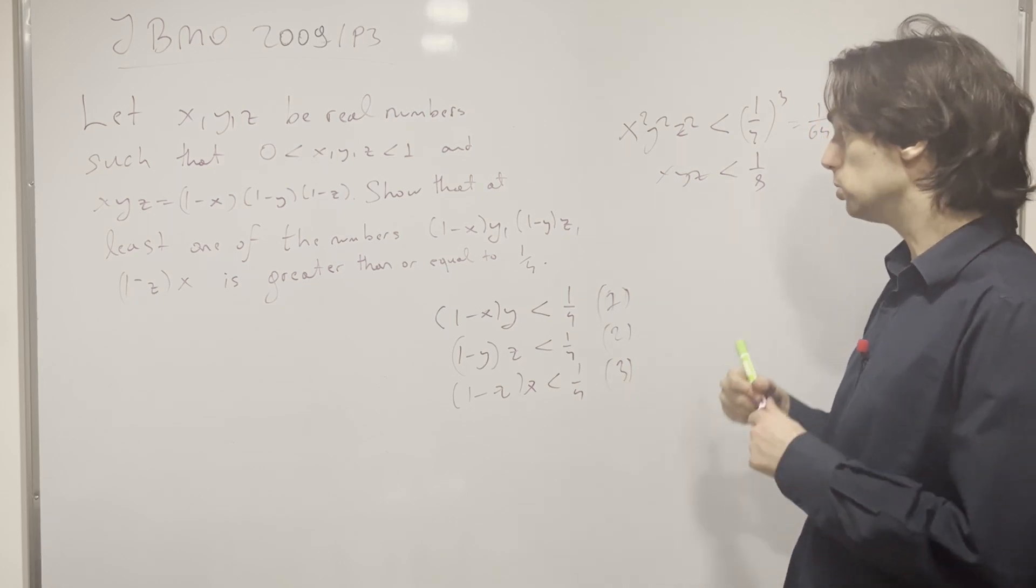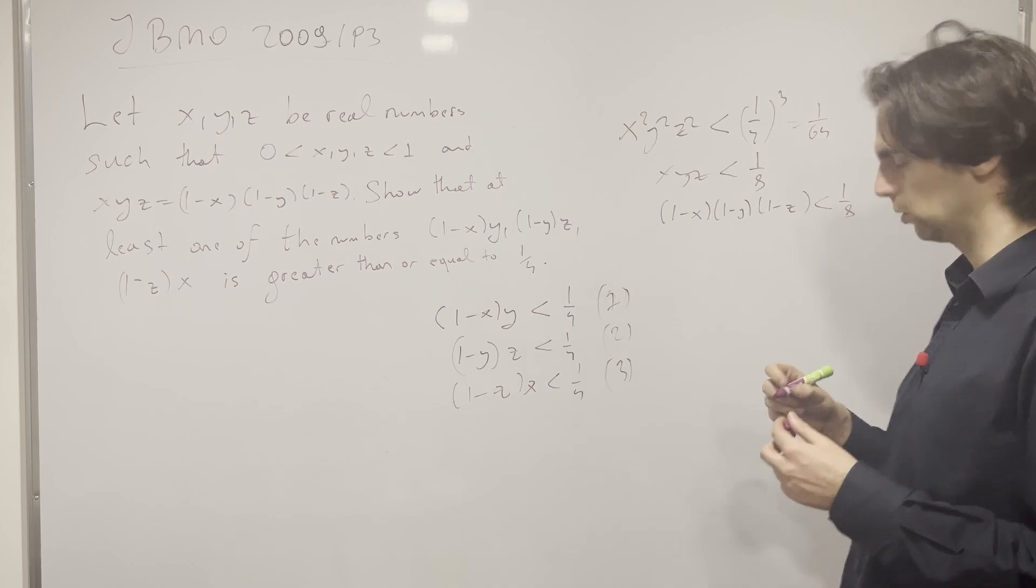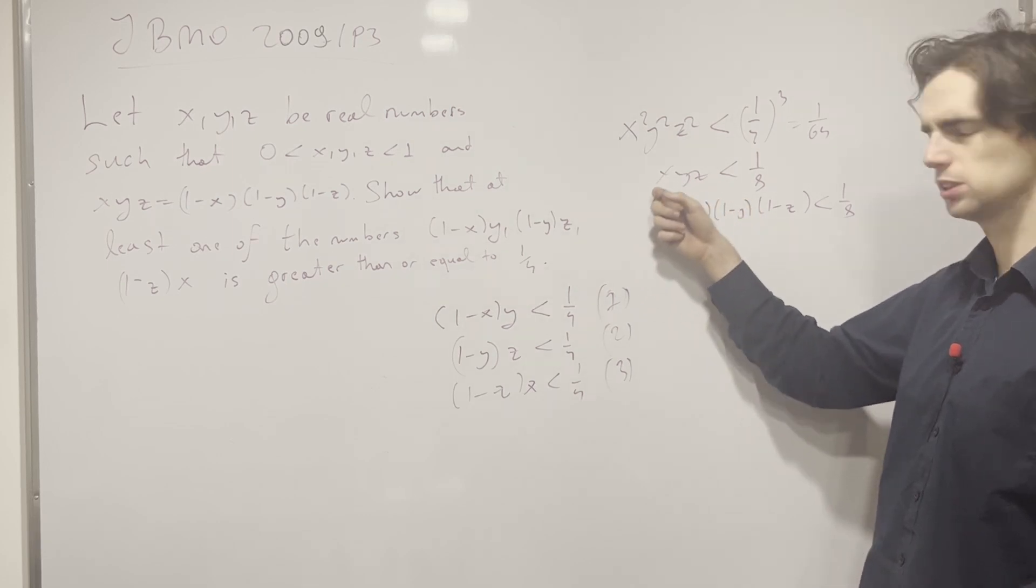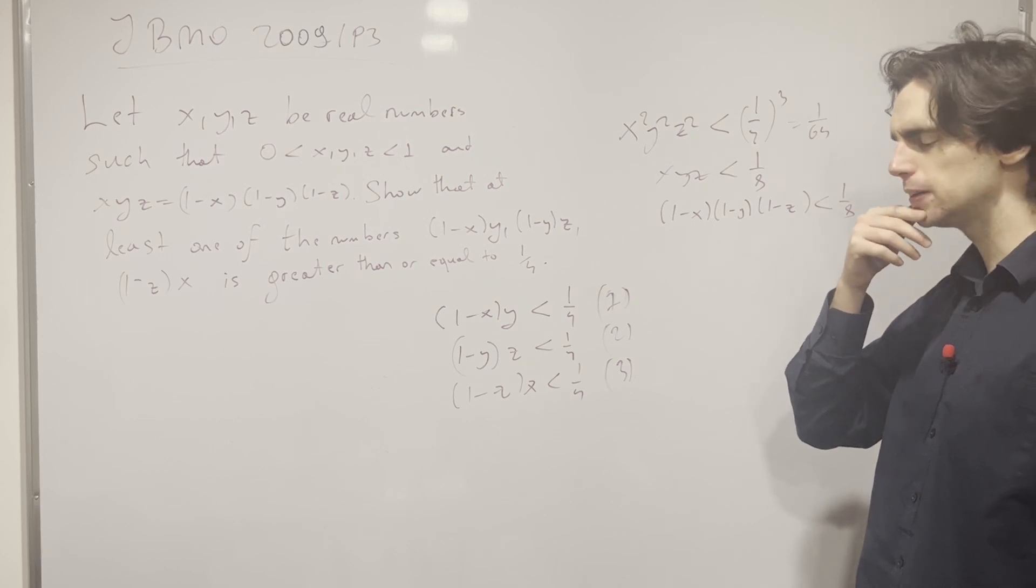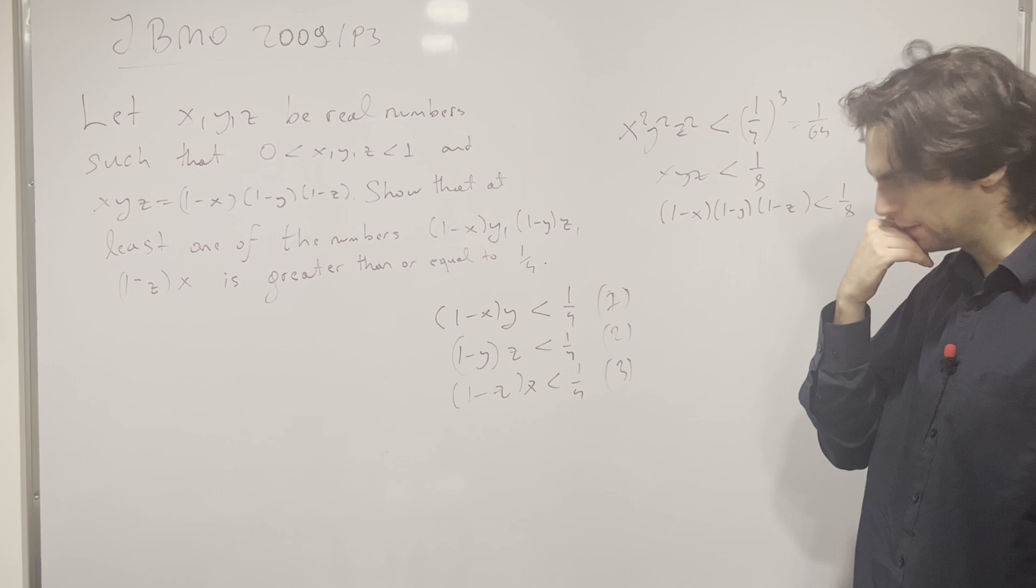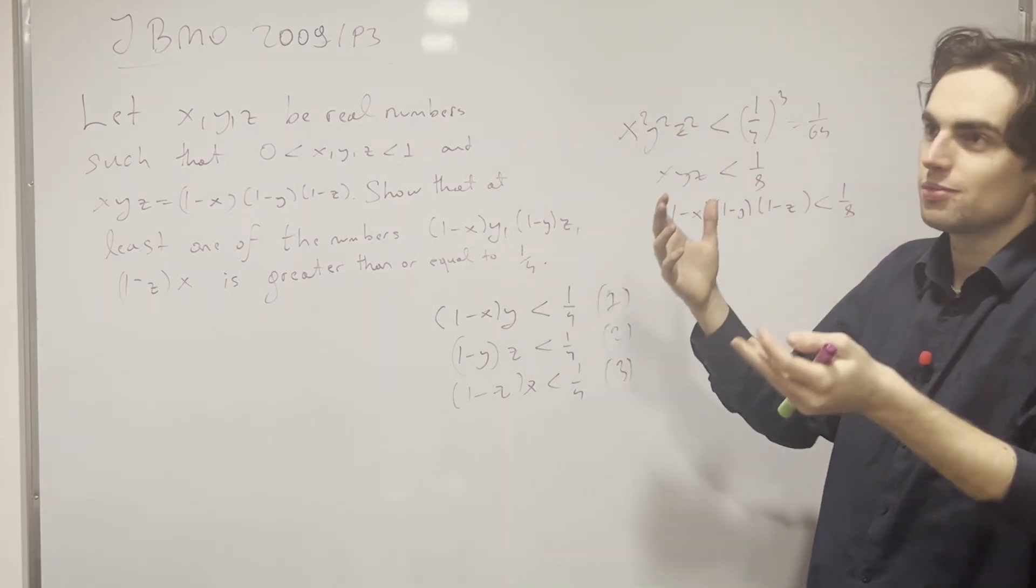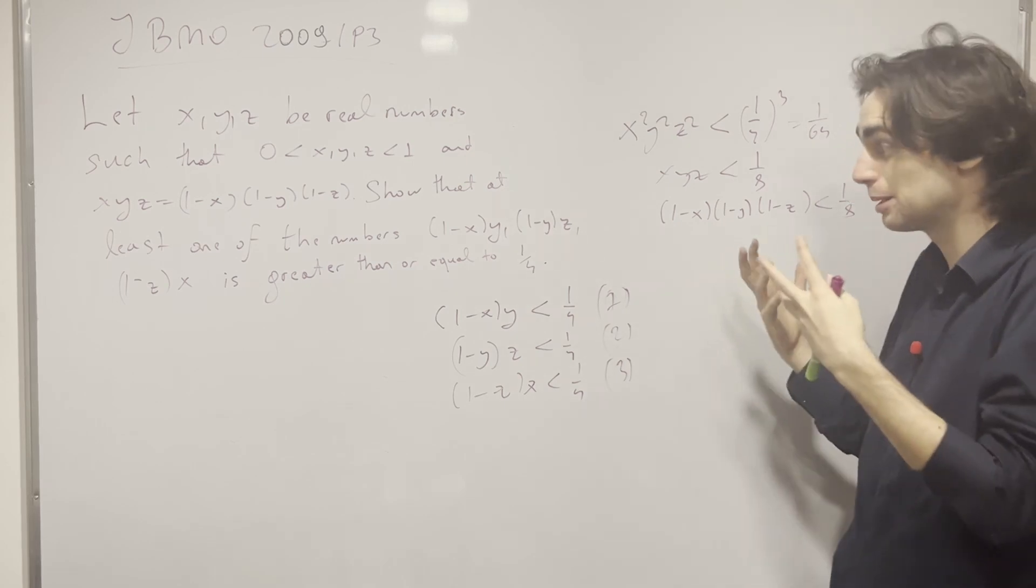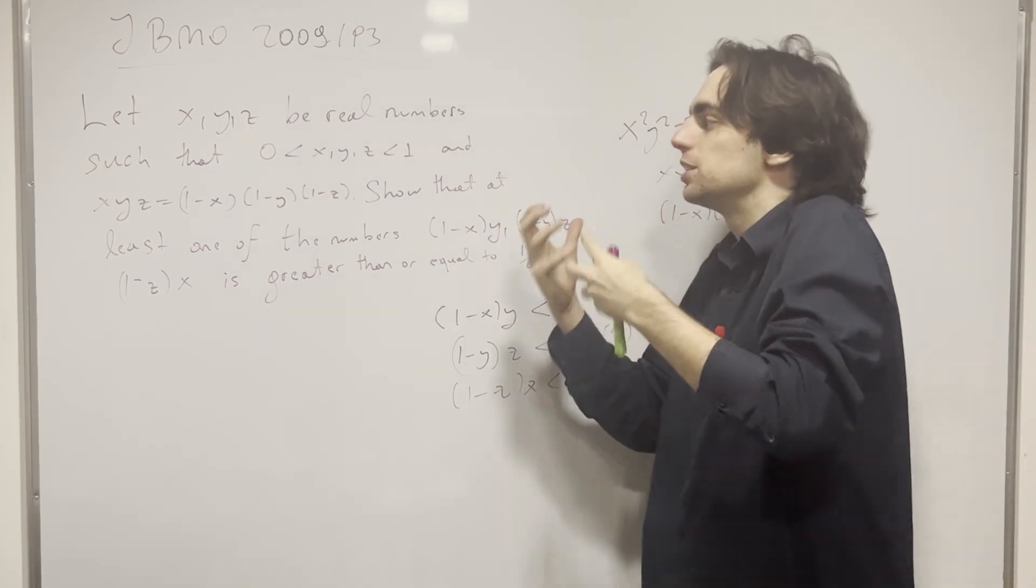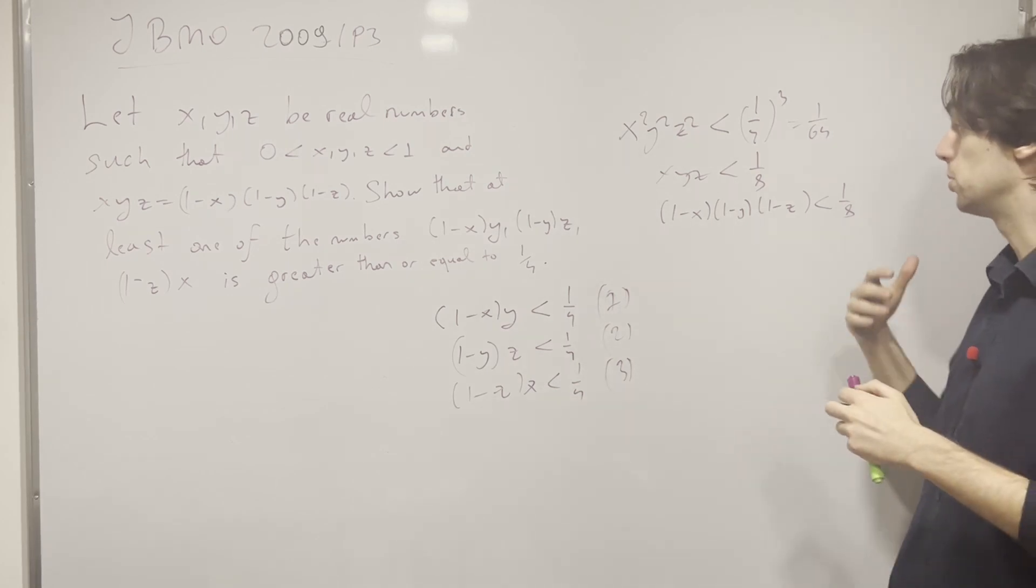Which also means that 1 minus x, 1 minus y, 1 minus z is also less than 1 over 8. Now, what does this sort of tell you? Both of these things are true. However, it seems like roughly what's happening, like mind you, if x, y, z is less than an 8, like these numbers are sort of, because x and 1 minus x, you would expect one of them to be near a half or something like that. But here you get every single one of them is less than 1 over 8. It seems wacky, it seems a bit strange.